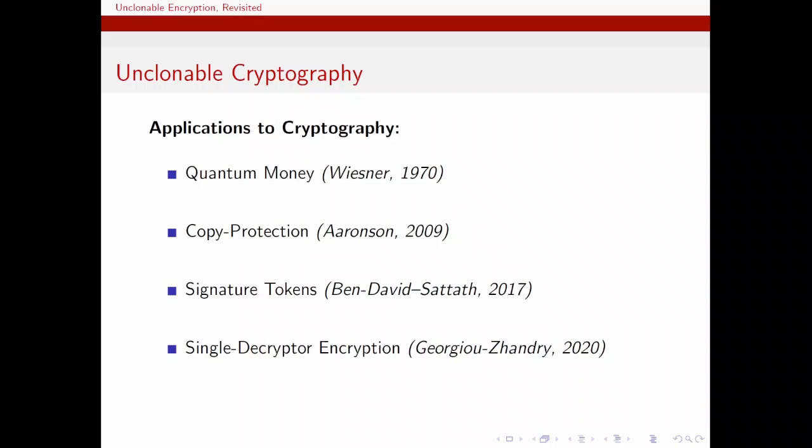Signature tokens allow you to sign messages only once given a quantum state, which means it has to be unclonable. Likewise, in single decryptor encryption, there is a decryption key which cannot be used more than once for the decryption functionality. And finally, unclonable encryption, which is the topic of today's talk, introduced by Broadbent and Lorde, is a primitive where ciphertexts cannot be cloned in a way that preserves the functionality of being decrypted into the original message.